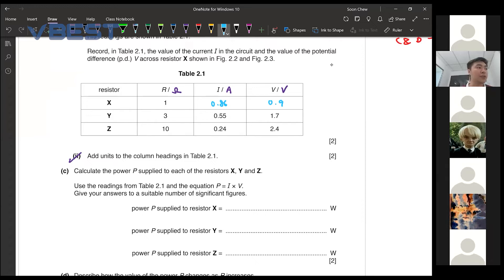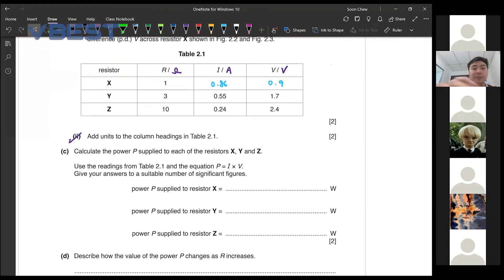Now another thing about your readings over here, you guys should follow their decimal places. If they give you one decimal here, you also put one decimal. If they give you two decimal, you also follow two decimal. So if let's say the reading you get just now was one volt, don't just put one in. You need to put 1.0 instead. So follow their significant figure or their decimal places.